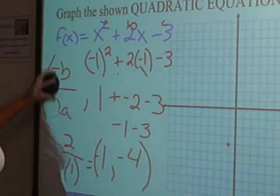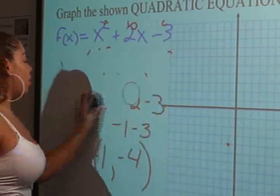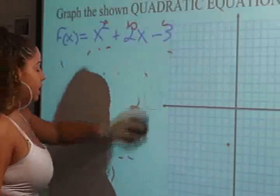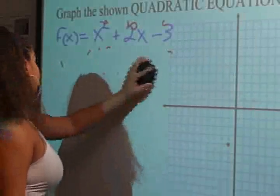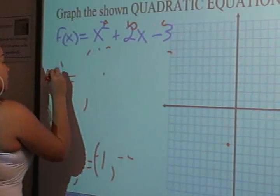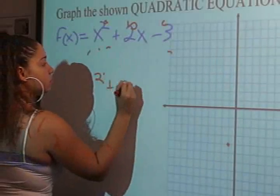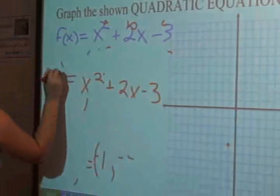Our next step will be to find the x-intercepts. And to do that, all you're going to do is take the entire equation and set it equal to 0. So, this becomes x squared plus 2x minus 3 all equal to 0.